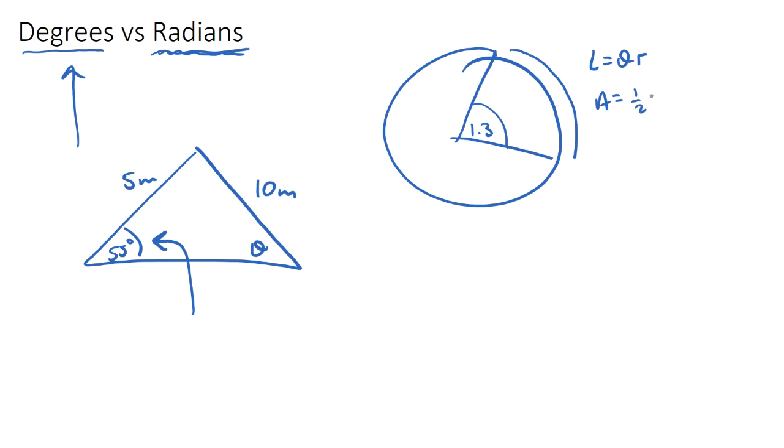The area of the sector is a half theta r squared and the theta in these two equations are radians. They need to be in radians. If you put degrees theta in there, you're going to get massive answers for the length of an arc and area and it's actually not correct.